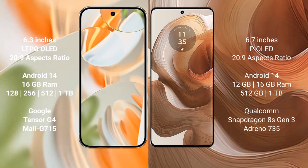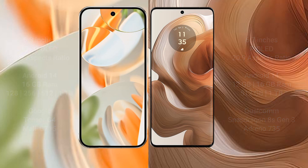The Google Pixel 9 Pro comes with 16GB RAM, with internal storage options of 128GB, 256GB, 512GB, and 1TB. It is powered by the Google Tensor G4 processor with GPU model G715. The Motorola Edge 50 Ultra comes with 12GB or 16GB RAM, with 512GB and 1TB internal storage options, powered by the Qualcomm Snapdragon 8 Gen 3 processor and Adreno 735 GPU.